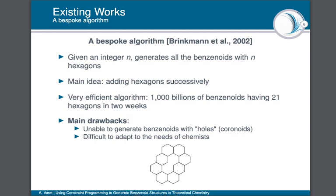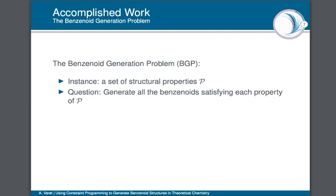Regarding existing work, in 2002 Brinkmann et al. presented an algorithm able to generate all the benzenoid structures of n hexagons for a given n. The main idea of this algorithm is to add hexagons successively. It is very effective but has the following drawbacks: firstly, it is unable to generate benzenoids with holes (coronoids), as shown in the figure; and moreover, it is unable to generate specific kinds of benzenoids because we have to modify the algorithm for each new kind of molecule we want to generate.